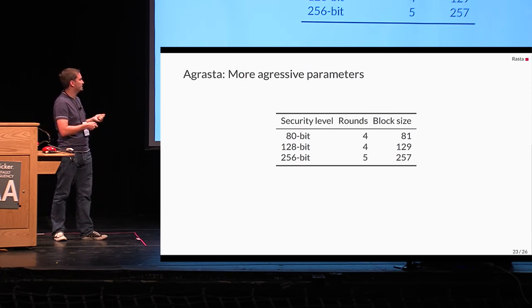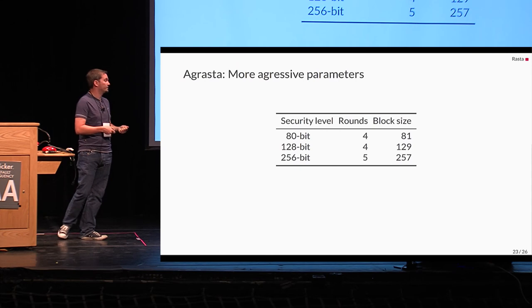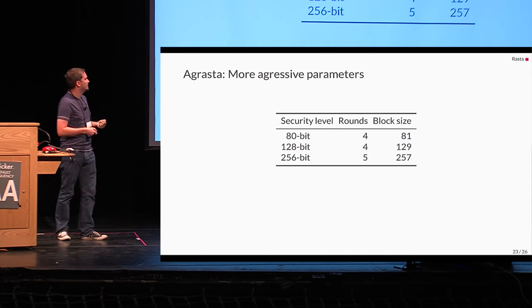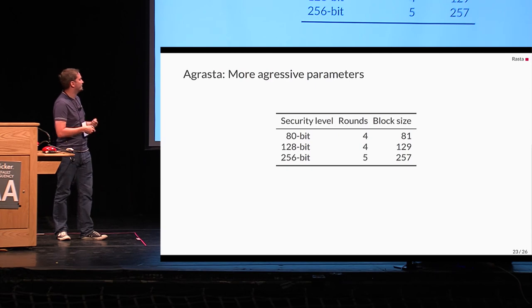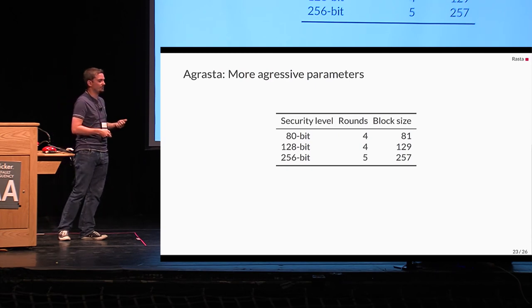And how do we define Agrasta? Basically, we just take the minimum block size, plus one bit to get an odd block size, and add one more round, as mentioned before. So, we have four rounds for 80 and 128 bit, and five rounds for 256 bits.